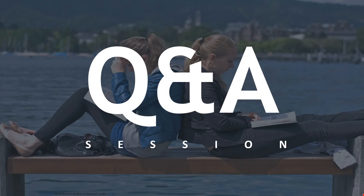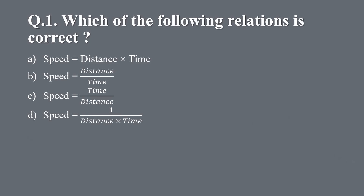Students, now let us revise what we have learnt today. Question 1: Which of the following relations is correct? a) Speed equals distance into time, b) Speed equals distance upon time, c) Speed equals time upon distance, d) Speed equals 1 upon distance into time. The right answer is b) Speed equals distance upon time.